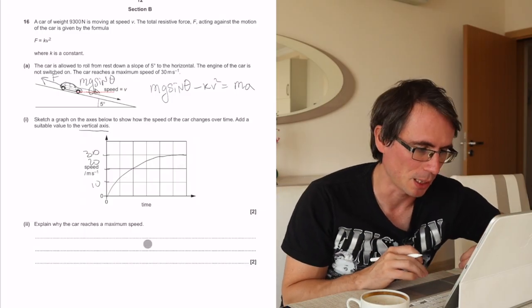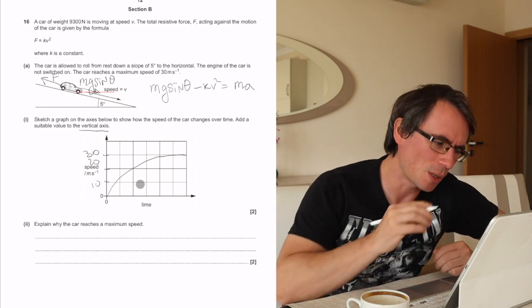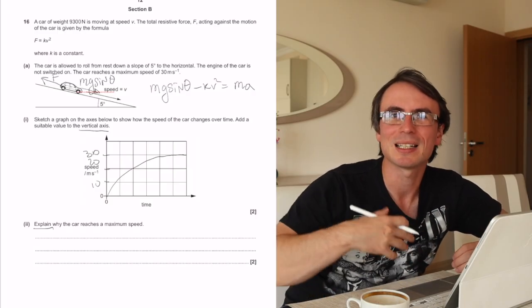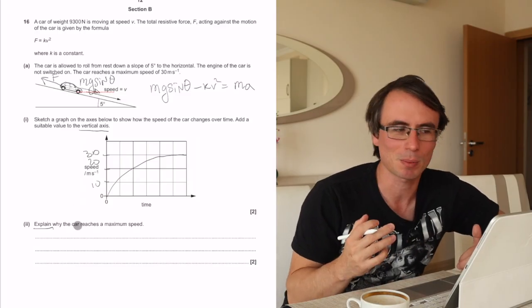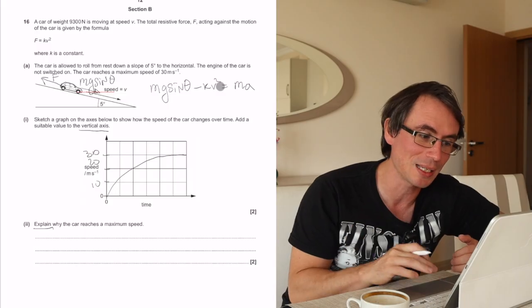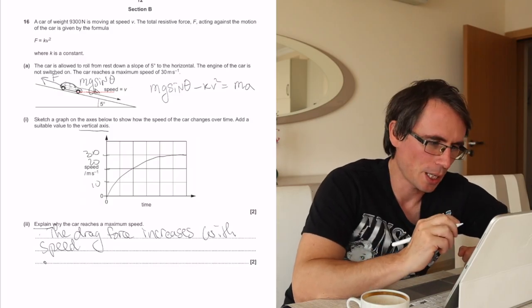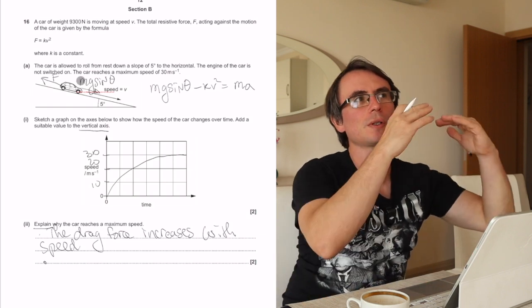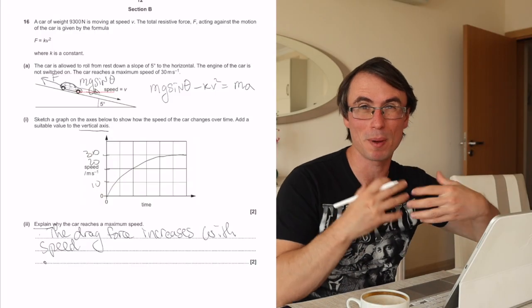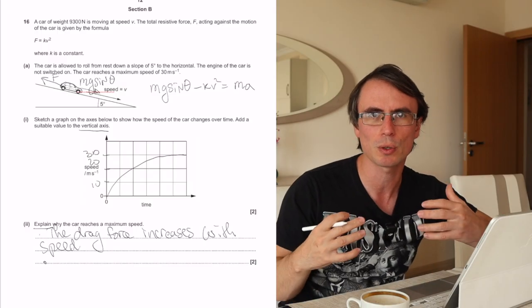Explain why the car reaches a maximum speed. All we need to do is put into words what we've already deduced in the previous question. Notice the command word is explain. Command words in A-level physics are incredibly important. Explain simply means tell me why. The air resistance is increasing with speed and will eventually be equal to the weight, not just to the weight. Whenever questions involve forces along a slope, the mark schemes typically reference the components of the weight along the slope or perpendicular to the slope. The drag force will equal the component of the weight which is along the slope, so I need to make sure I mention this.